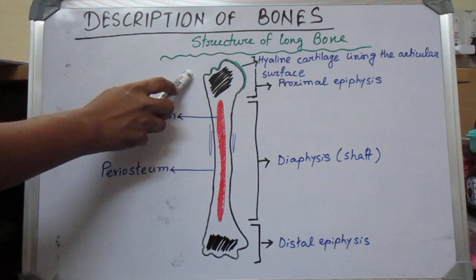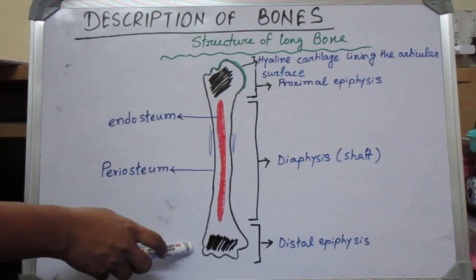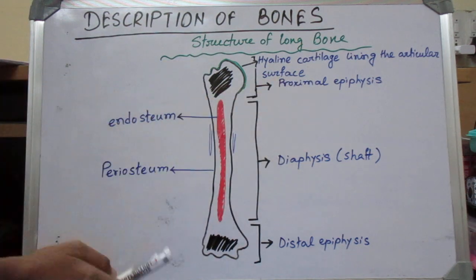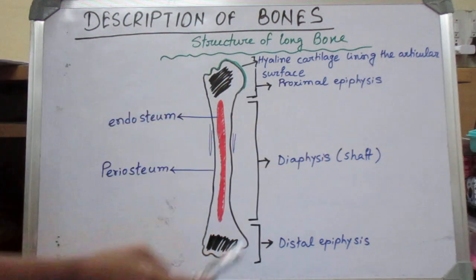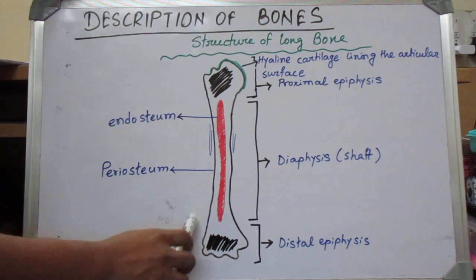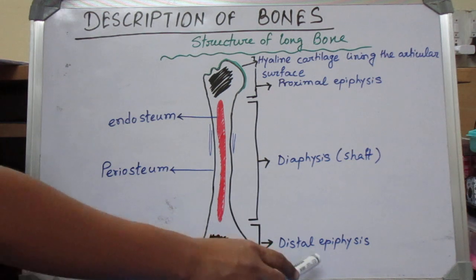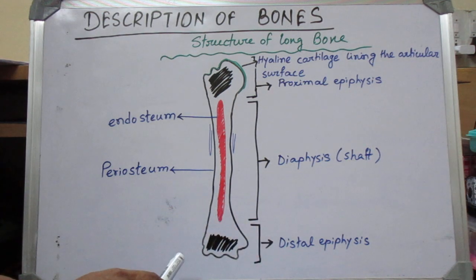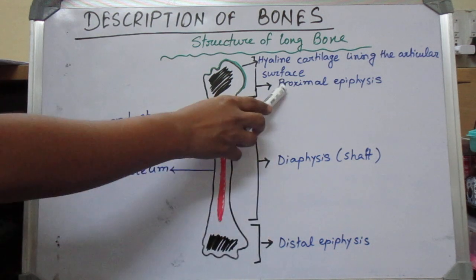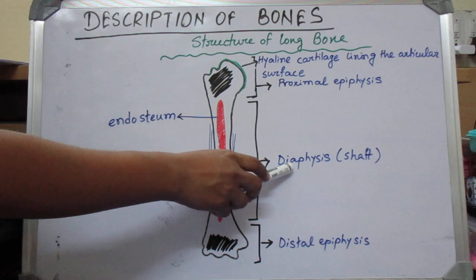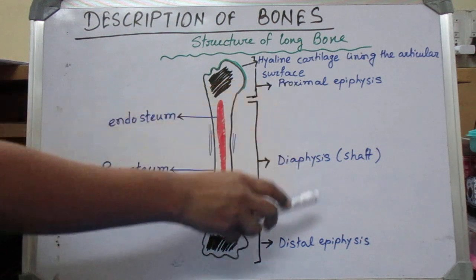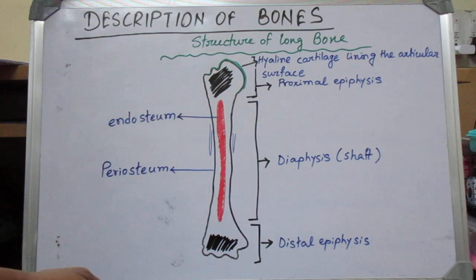The upper end and lower end are called epiphyses. The upper end is named the proximal epiphysis and the lower end is named the distal epiphysis. Epiphyses develop from the secondary center of ossification — both epiphyses are formed from the secondary center of ossification.